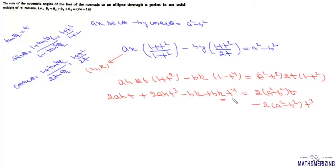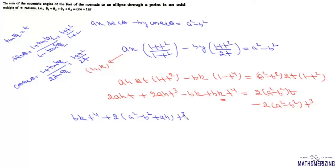This is a biquadratic equation in t. Rearranging, we write it as: bk·t⁴ + 2(a² - b² + ah)·t³ + 0·t² + 2(ah - a² + b²)·t - bk = 0.